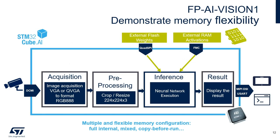The function pack running on the STM32H747 discovery board provides multiple and flexible memory configurations. Weights and activations can be placed in any combination either on the external or internal memories. It allows the user to easily evaluate and measure the different memory trade-offs for the application. The external memories extend the capabilities, for instance by supporting higher resolution camera and more complex neural networks.